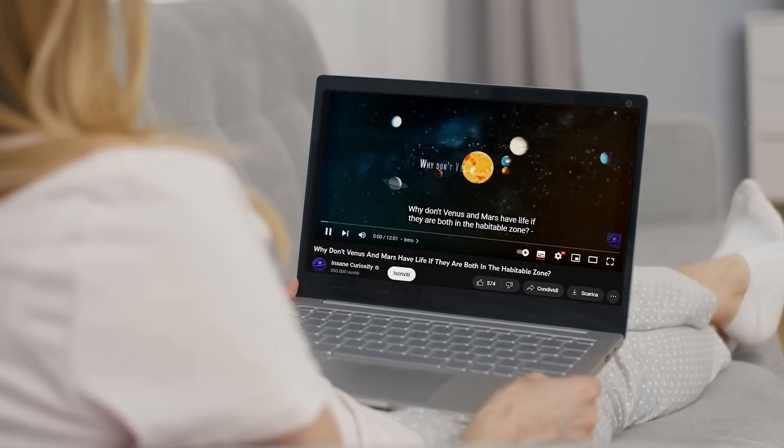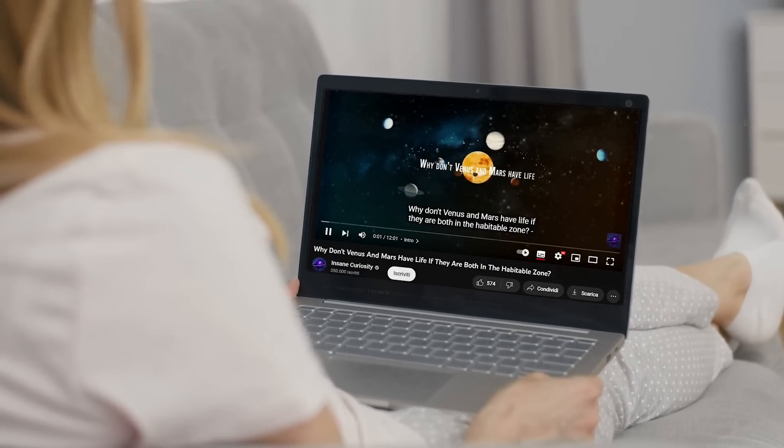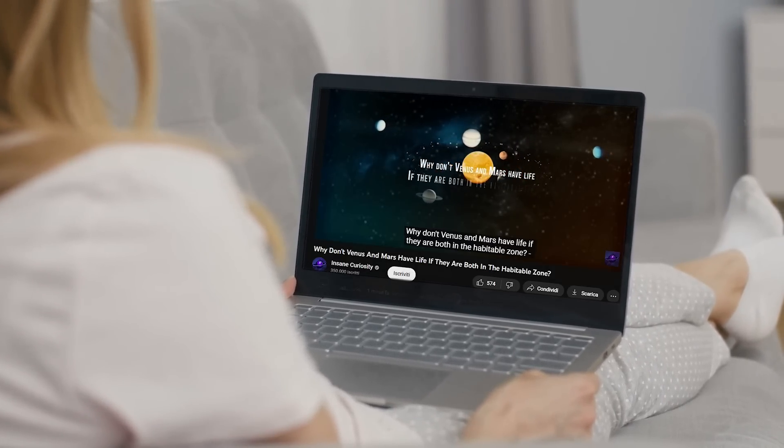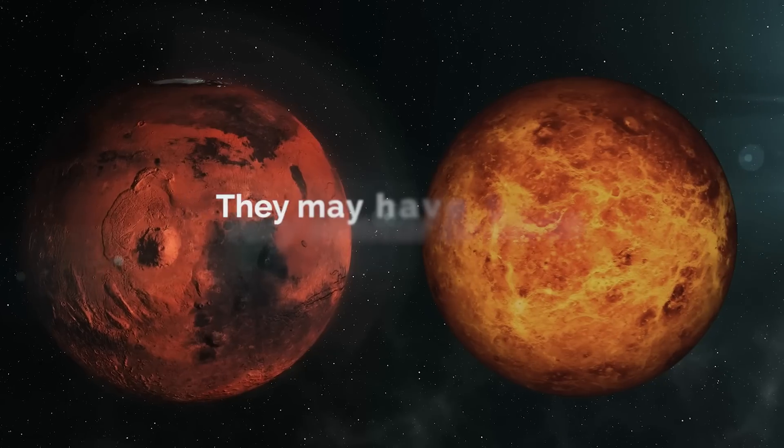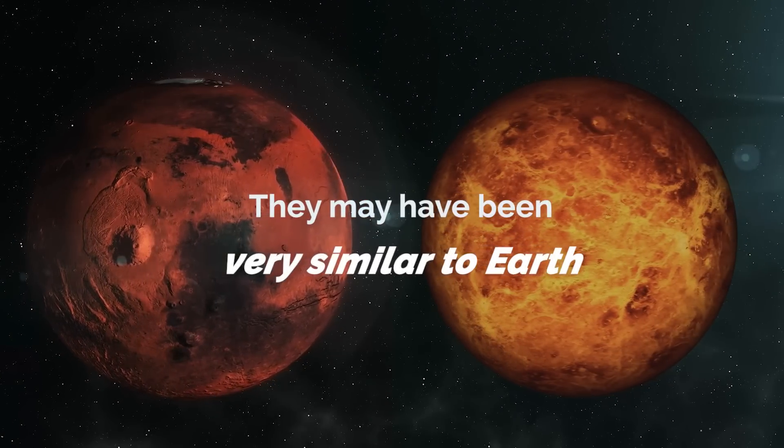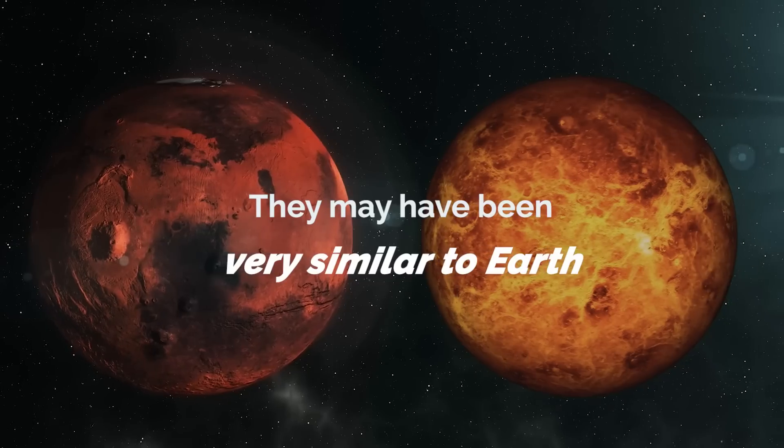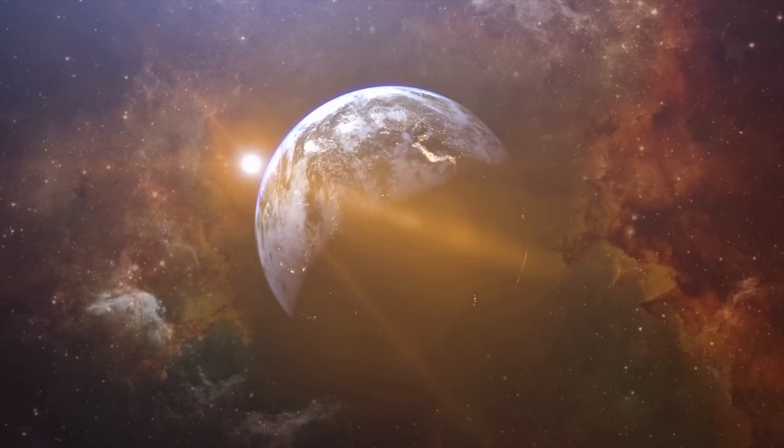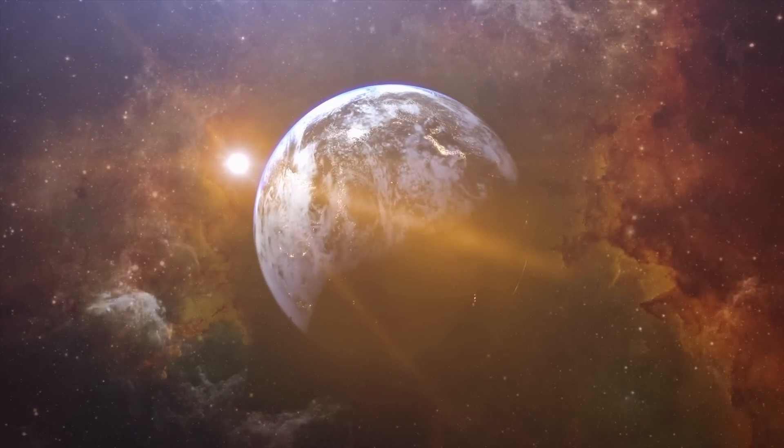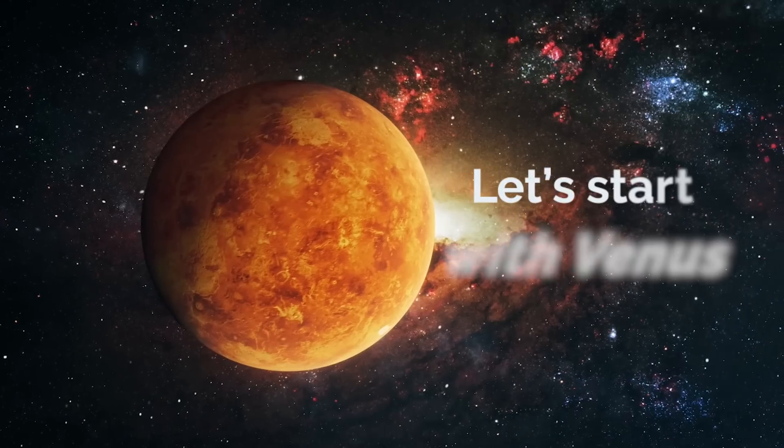In a past video, we talked about what all the planets in the solar system looked like billions of years ago. If you have not seen it, we recommend it. In that video, we mentioned that in the past, Mars and Venus may have been very similar to Earth. But how similar? Could they have had all the necessary conditions to house living beings? Let's start with Venus.